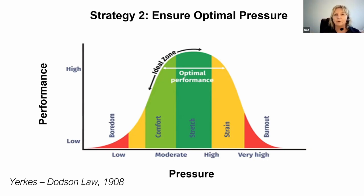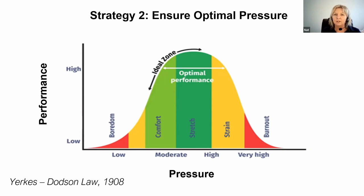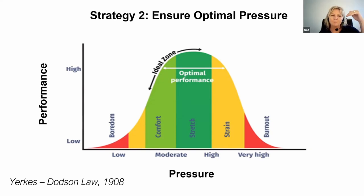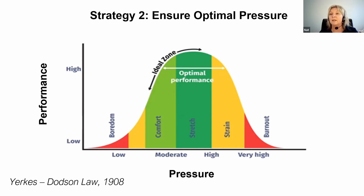There is this sort of optimal space that we operate in — you can see it there. At the top of the inverted U, there's an ideal zone, an optimal zone. But as you can see, the more pressure we get, our performance can start to deteriorate, to the point that if we stay in that for long periods of time, we can end up in a space of burnout.